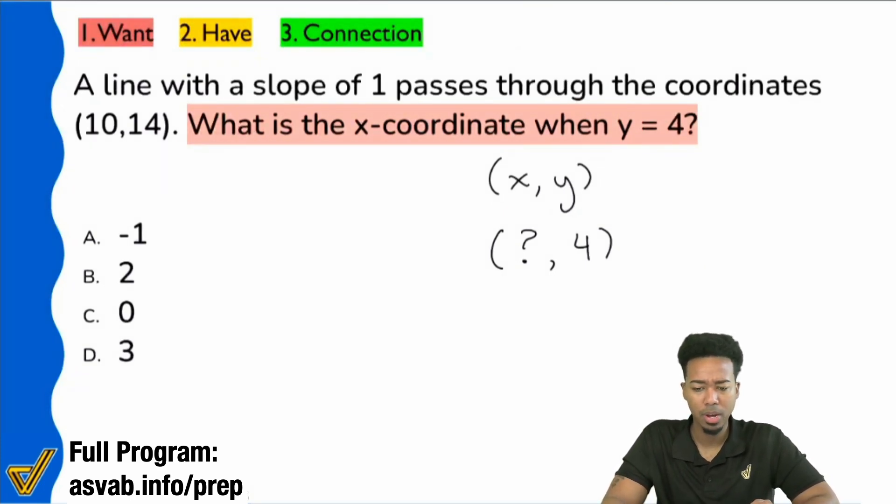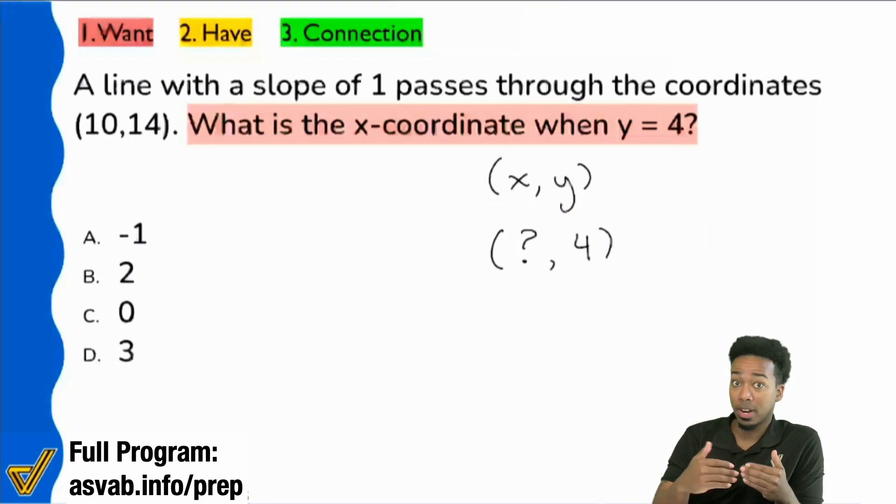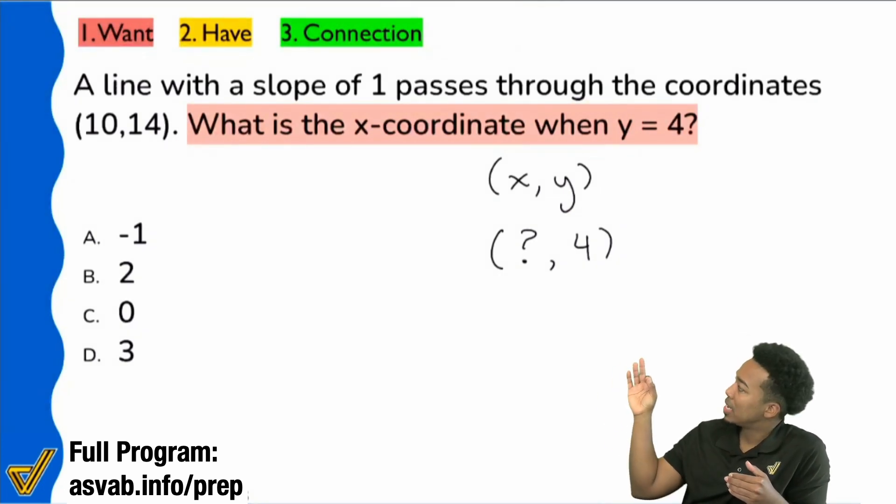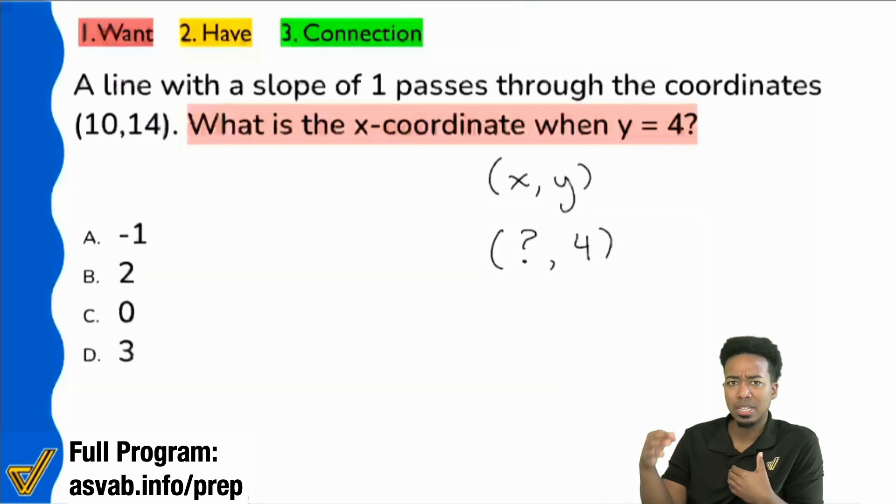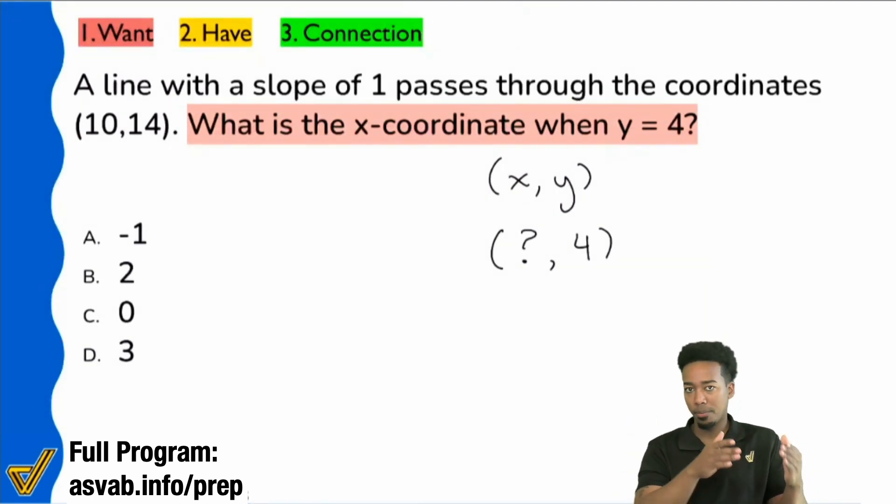Right on. So, again, I'm not revealing what math we're doing yet. It's going to be very obvious in a moment once we point out a very important keyword. But we need to first understand, hey, basically, simply put, what is it that we're being asked to find? And here, if it's a coordinate x comma y, we're looking for what x is when y is 4. Now, that's important, very important.